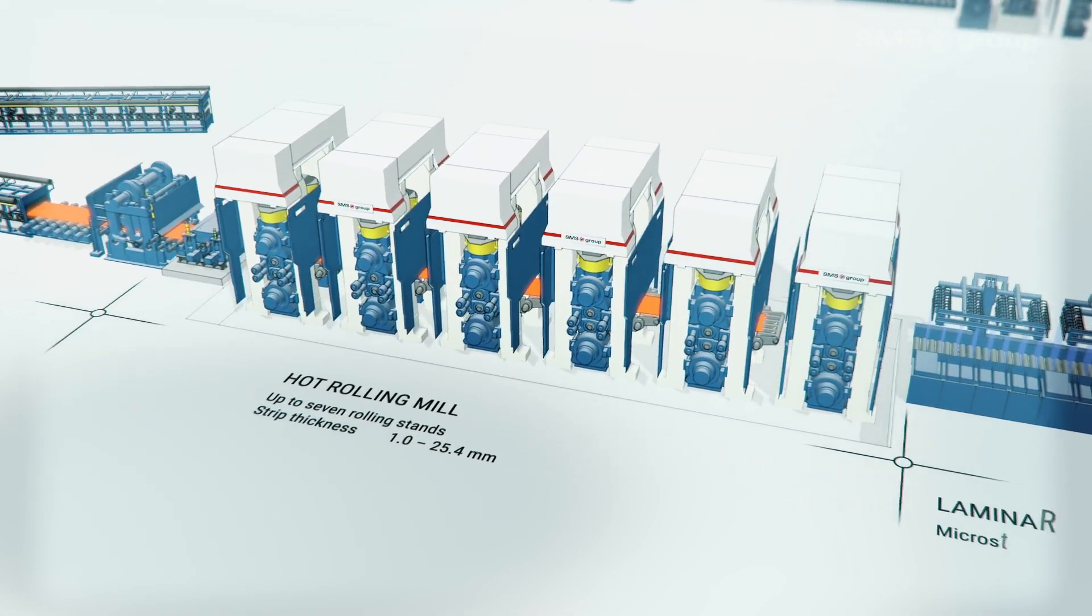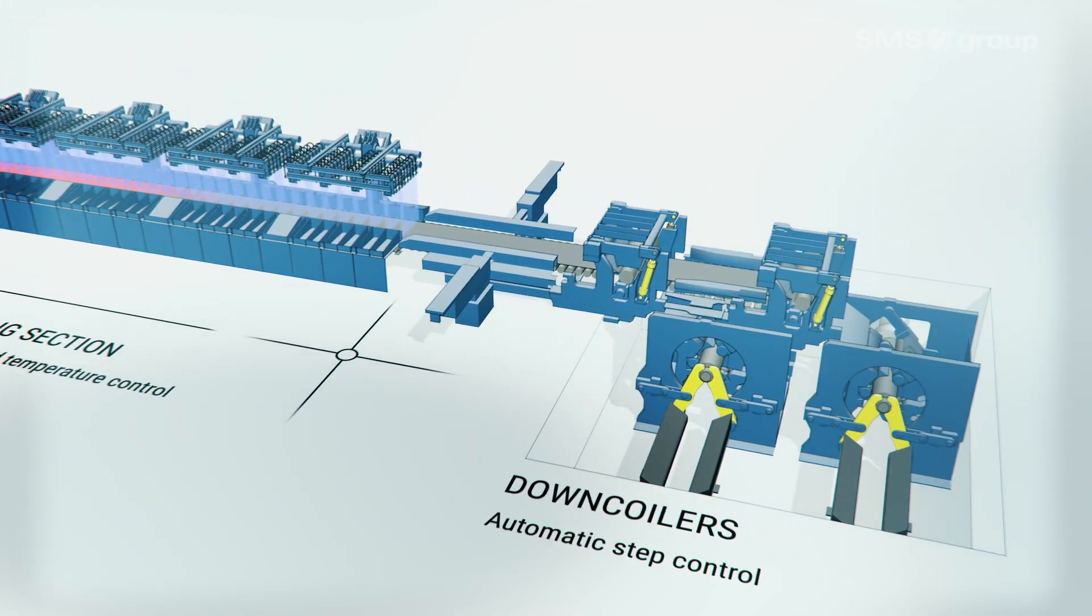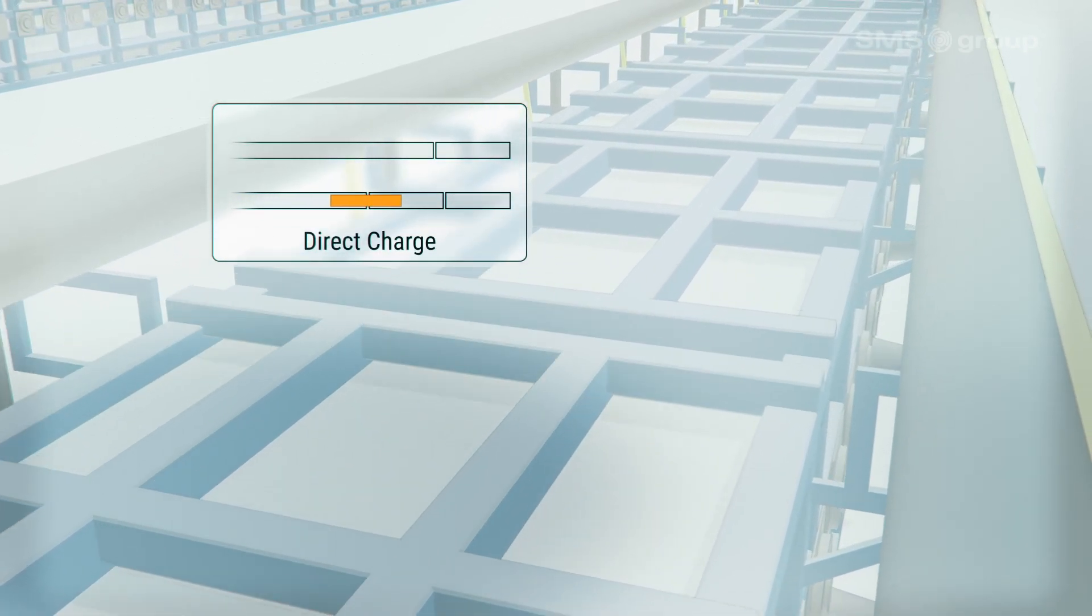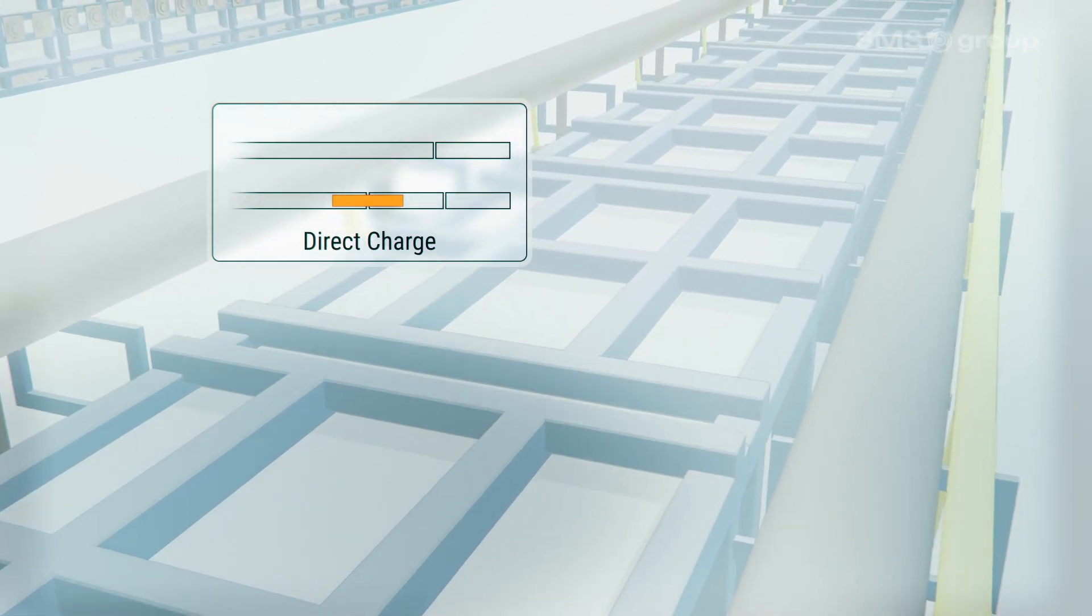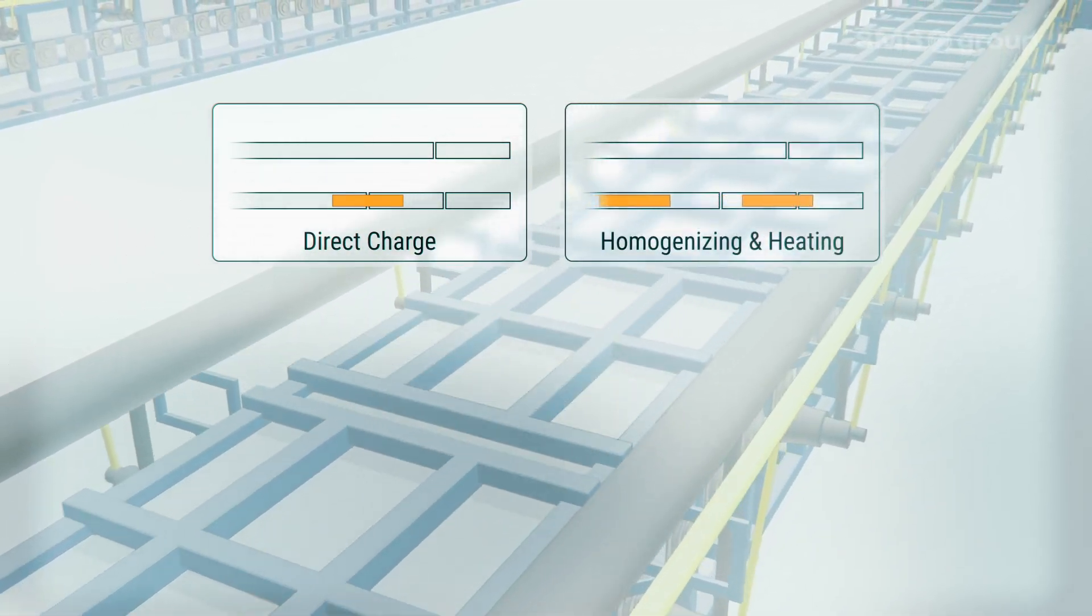A laminar cooling section and down coilers. Thin slabs are charged directly into a tunnel furnace. A slab yard is not required. The tunnel furnace homogenizes and heats the slabs.